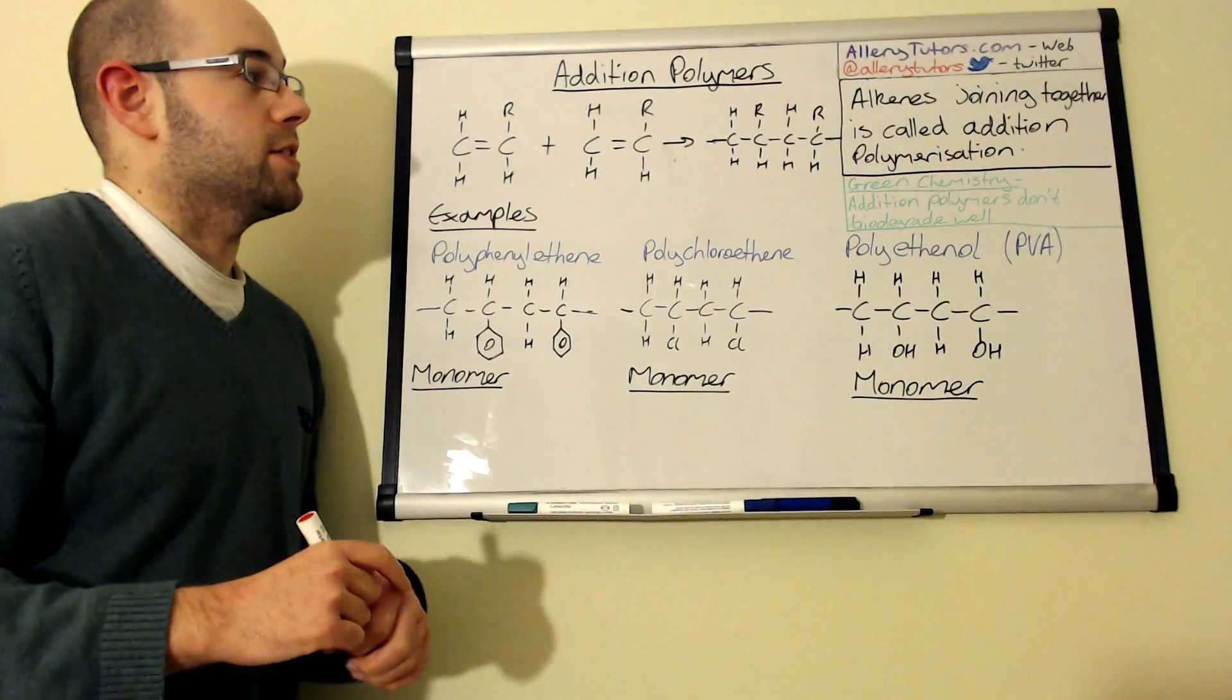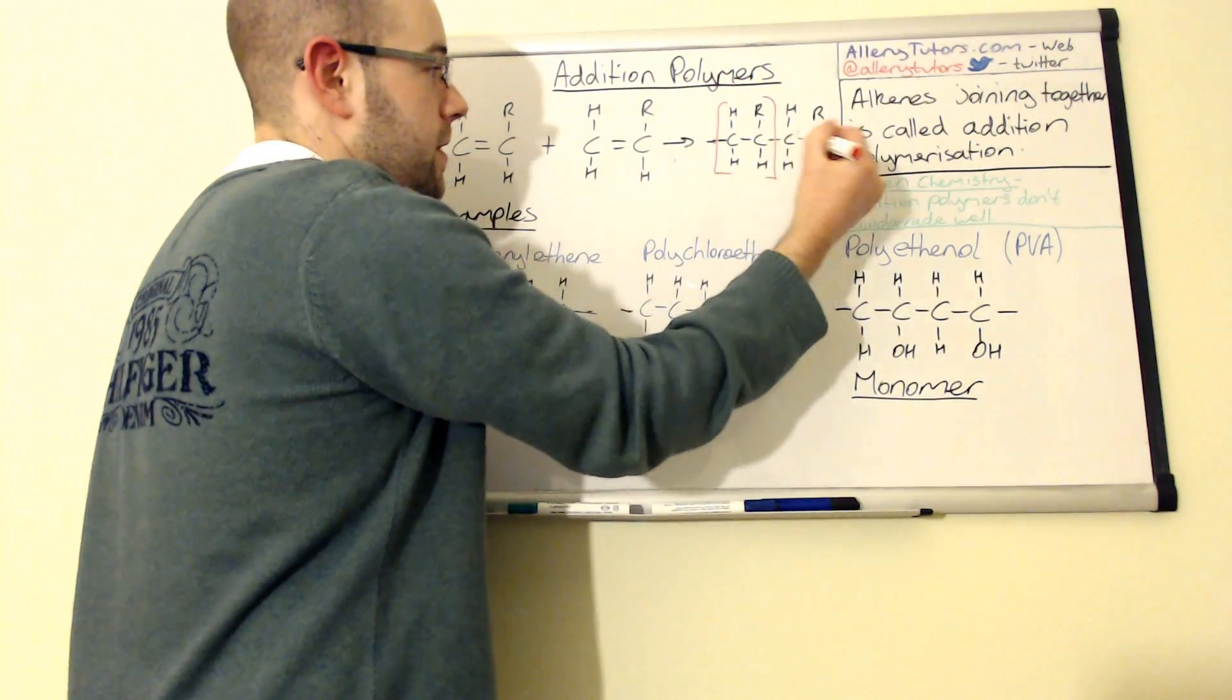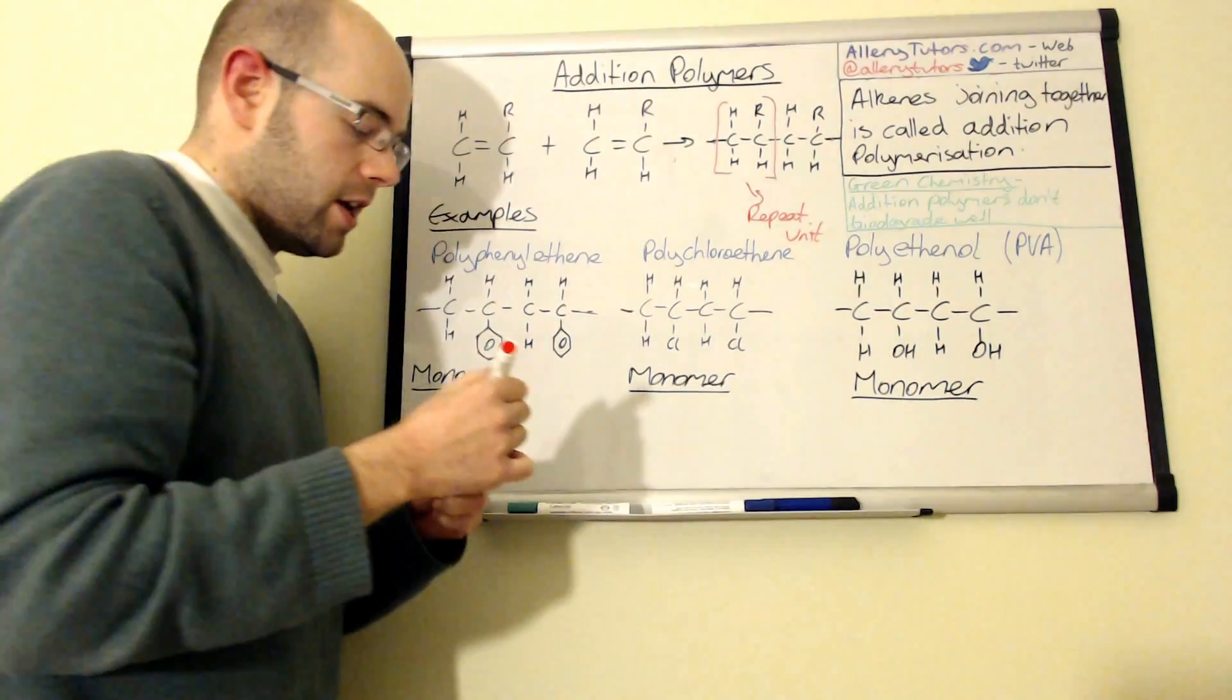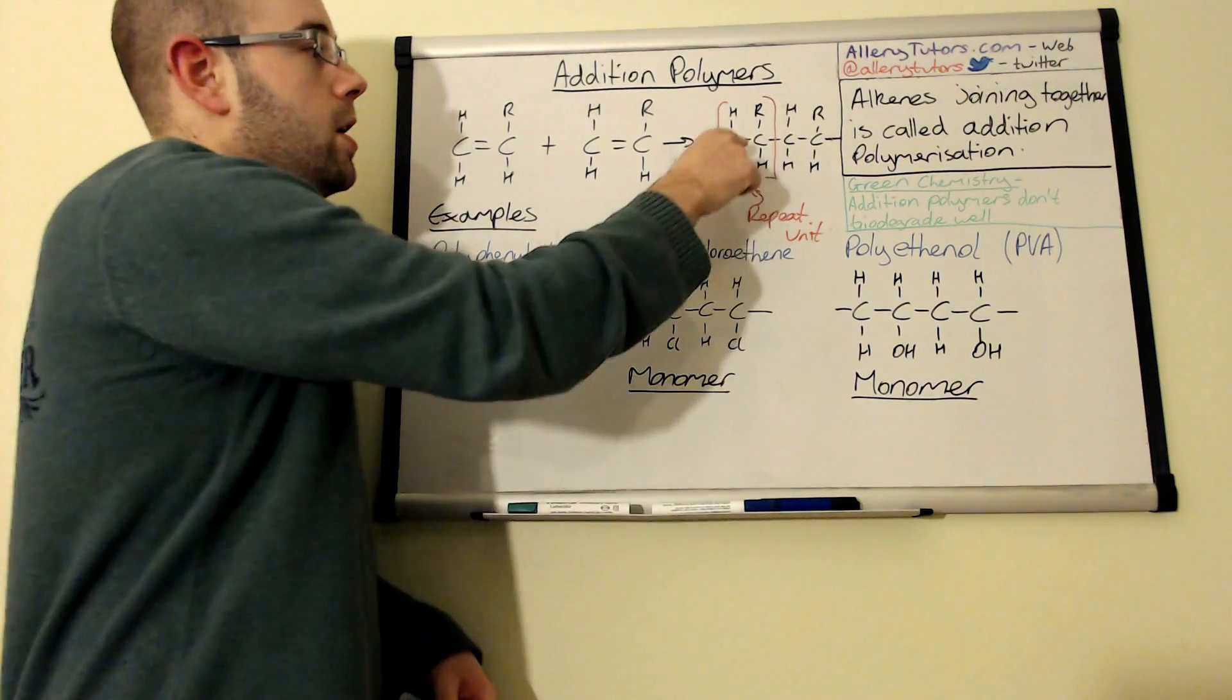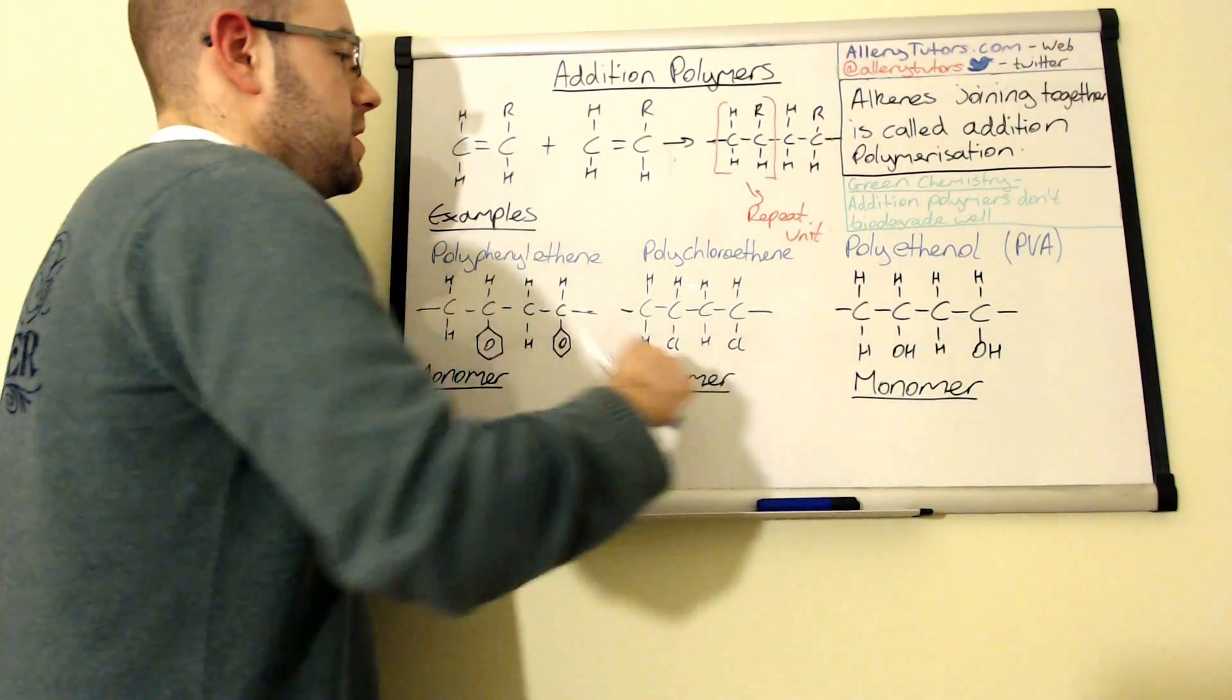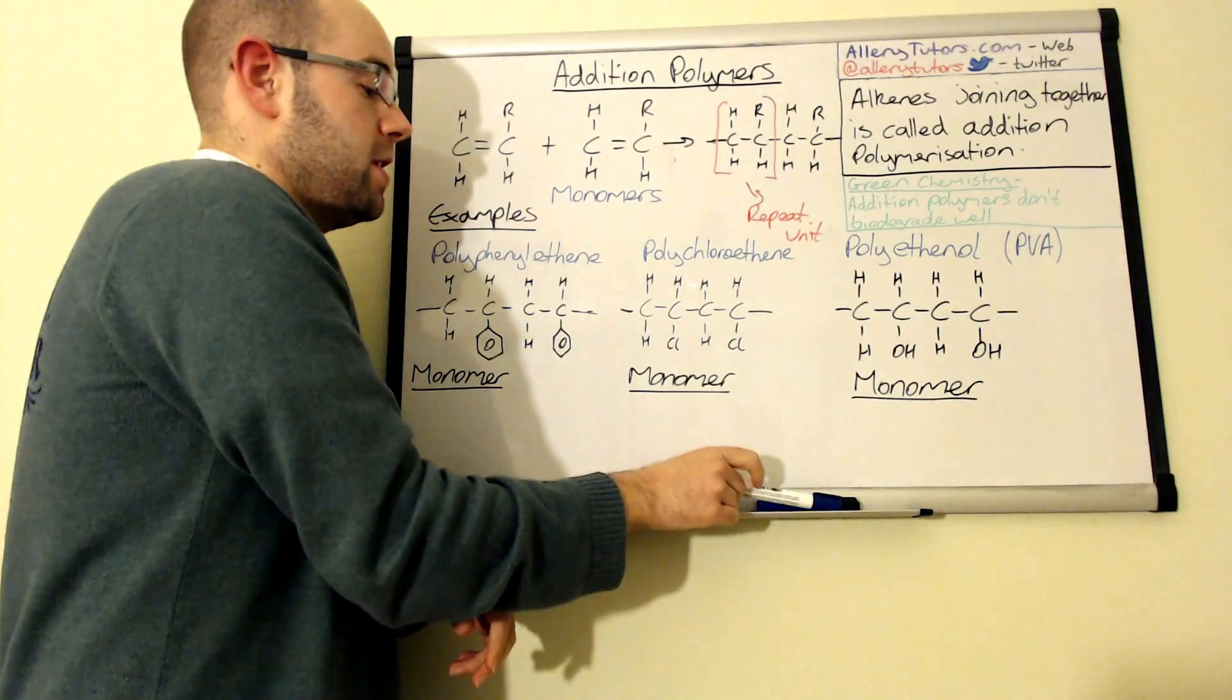Here's our polymer chain, our repeat unit you can see we've got HRHR, so our repeat unit would actually be that and we call this a repeat unit. The repeat unit to go back to the monomer that's actually made this molecule, all you do with addition polymers is you put the double bond back in between the two carbons and then you form these two which are on the side here and these are called monomers.